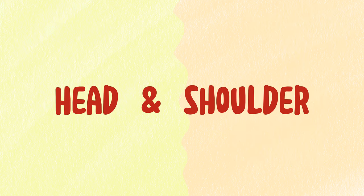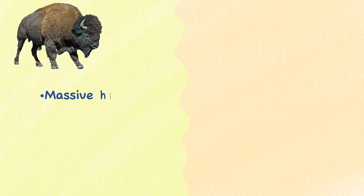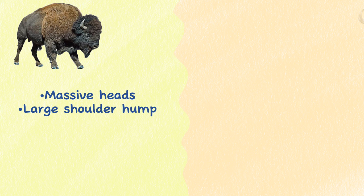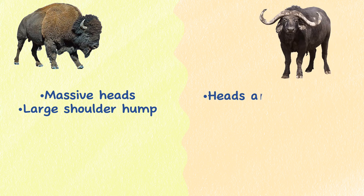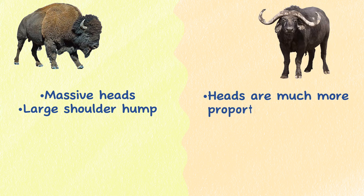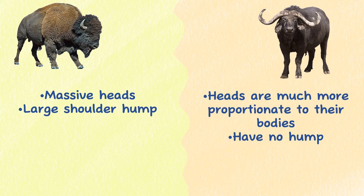Head and shoulder. Bison have massive heads and a large shoulder hump. Buffalo heads are much more proportionate to their bodies and they have no hump.